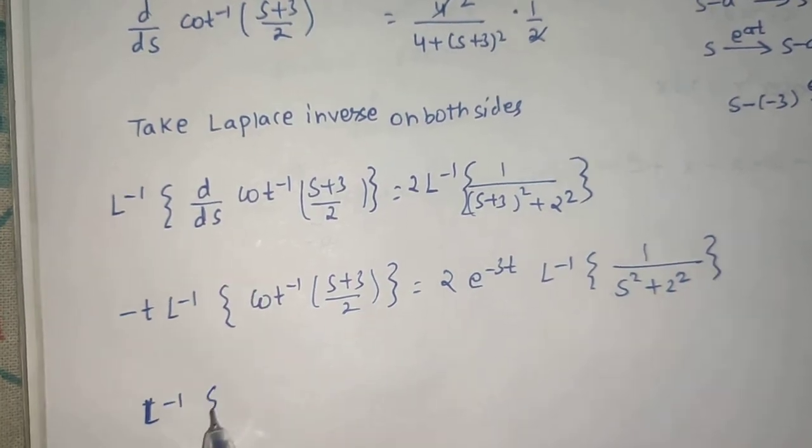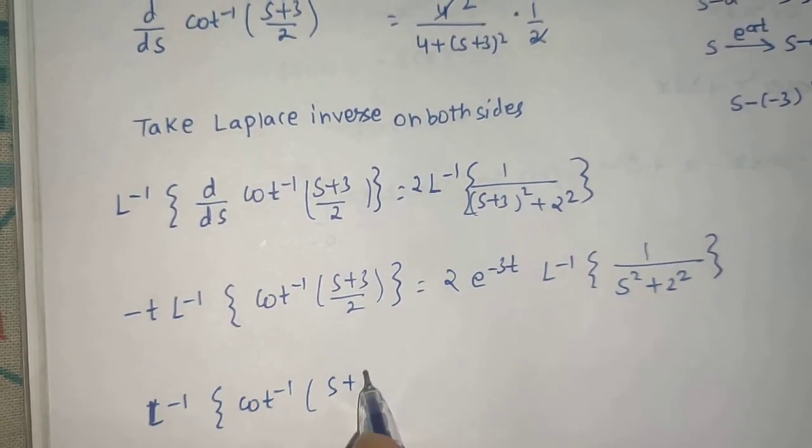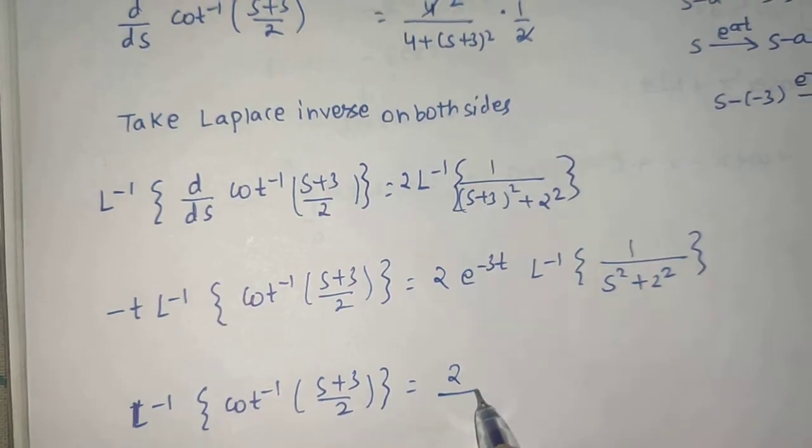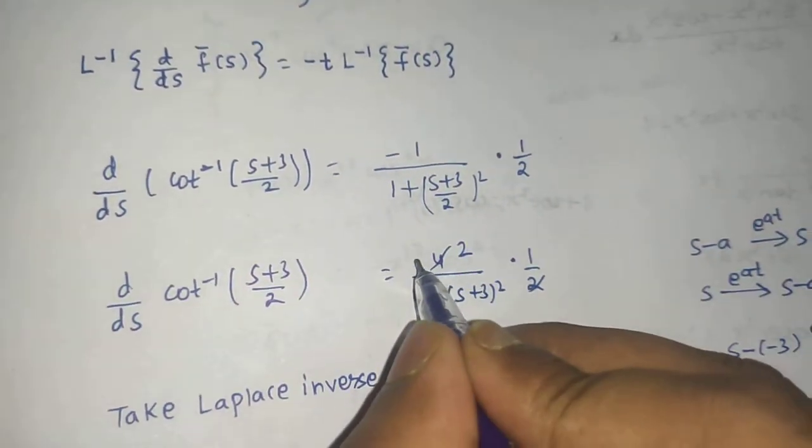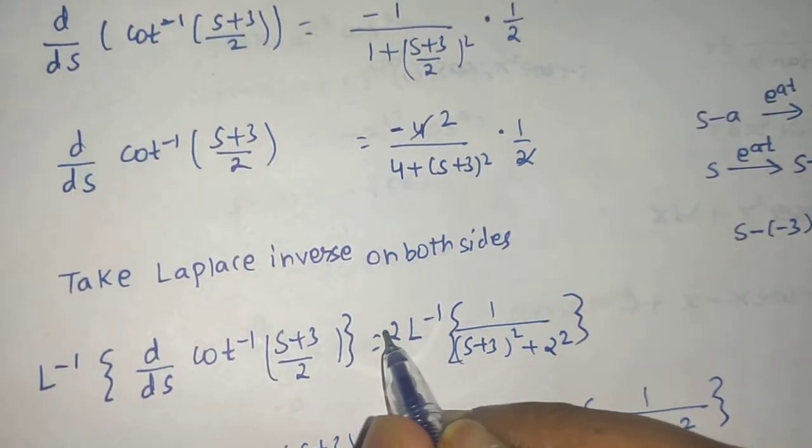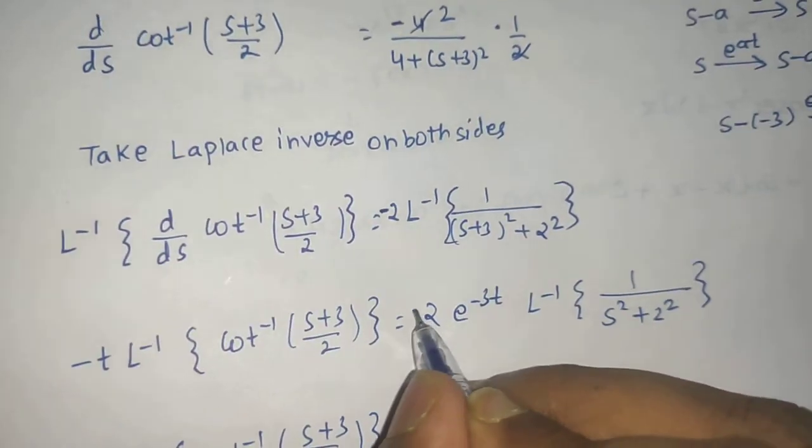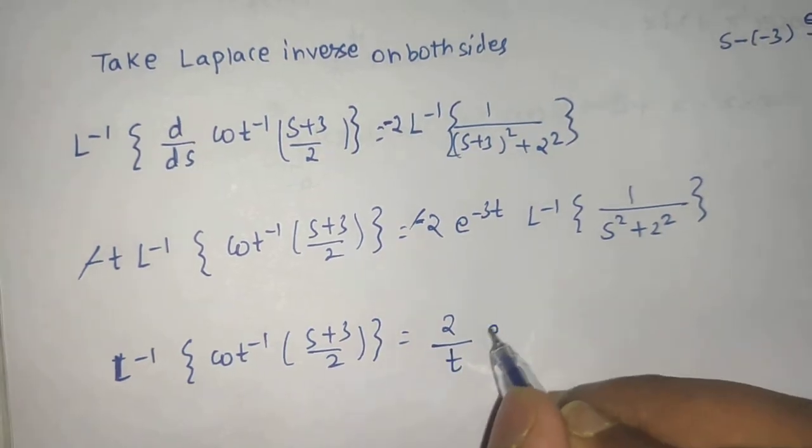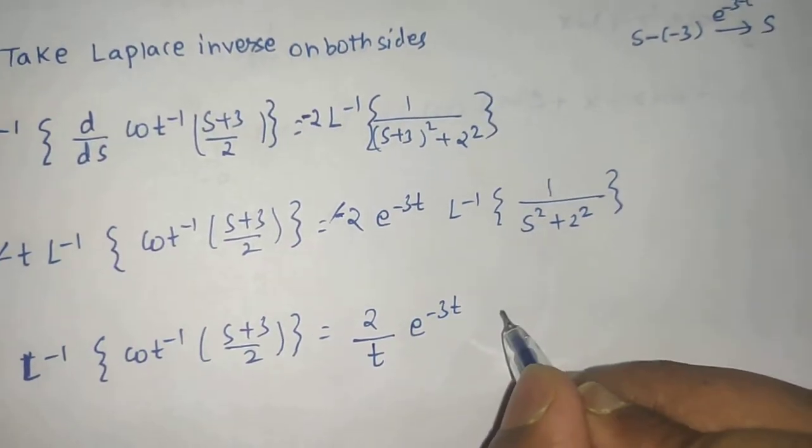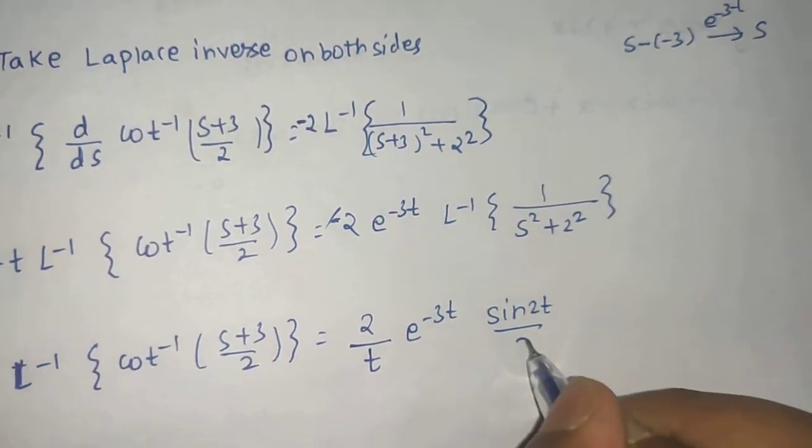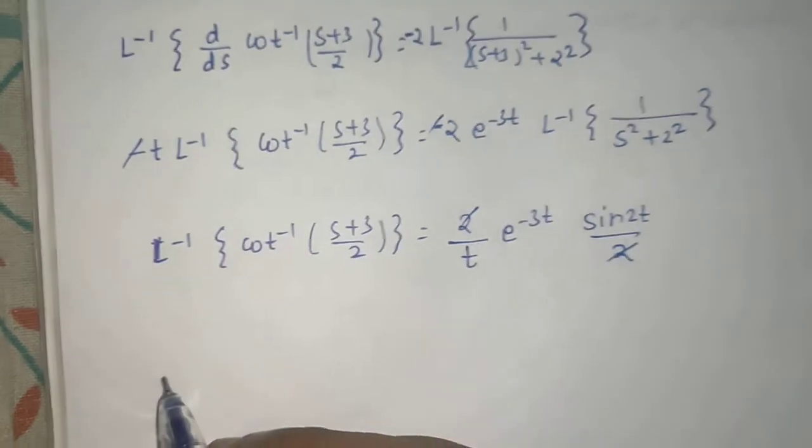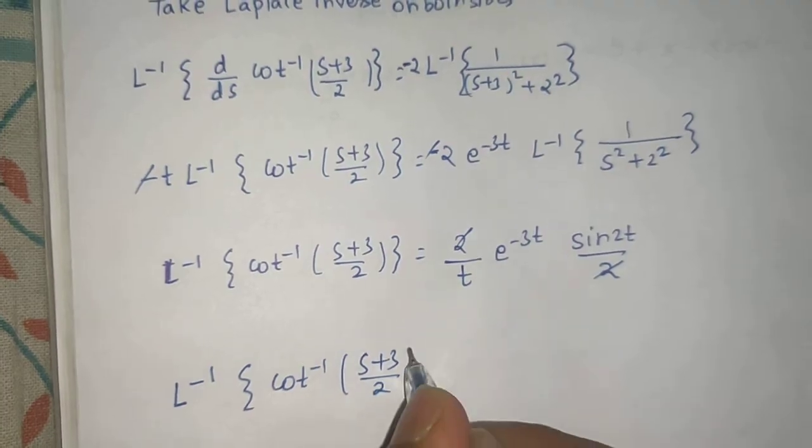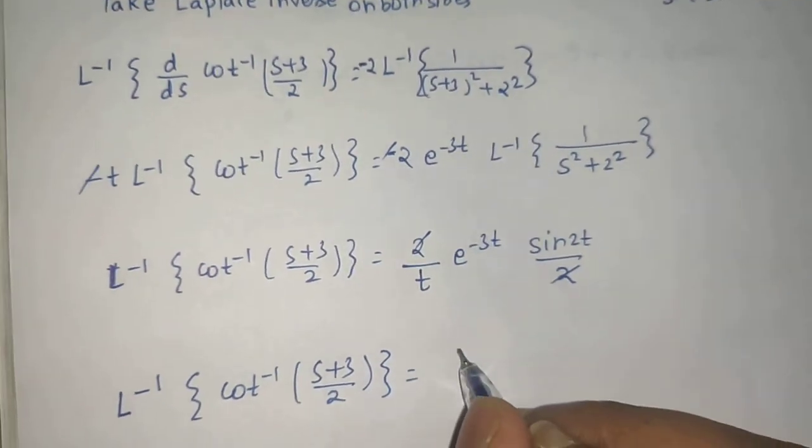So L^(-1){cot^(-1)((S+3)/2)} equals 2 times -T times e^(-3t) times sin(2t)/2. The two minus signs cancel, and sending T to the RHS gives 2/T. The 2s cancel, giving the final answer: L^(-1){cot^(-1)((S+3)/2)} = (1/T)e^(-3t)sin(2t).